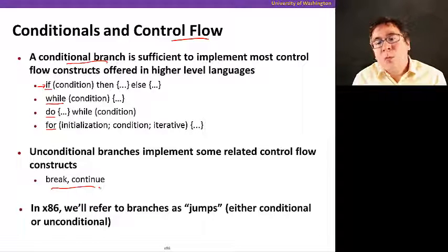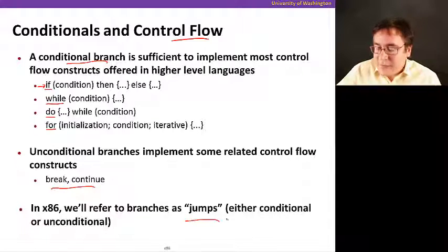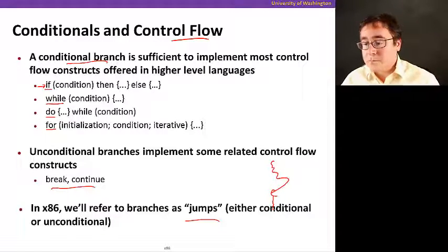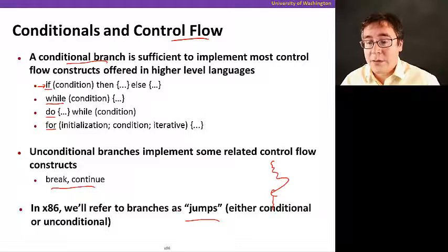In x86, we refer to branches as jumps because you're executing and it jumps to a different part of your program, either conditional or unconditional.